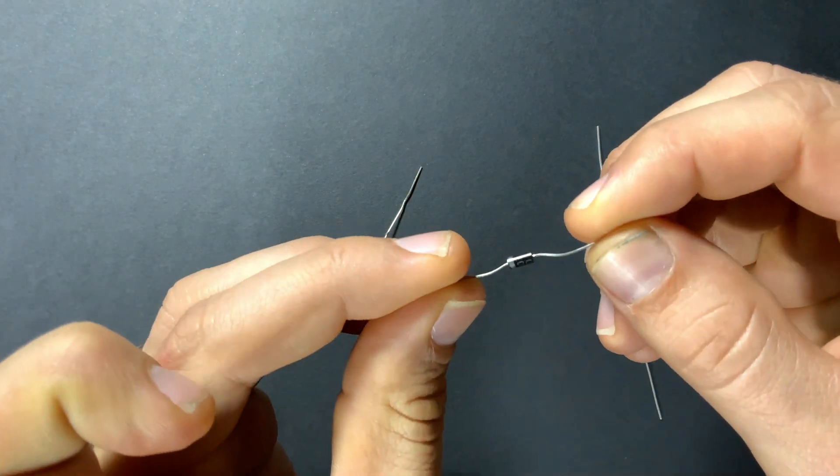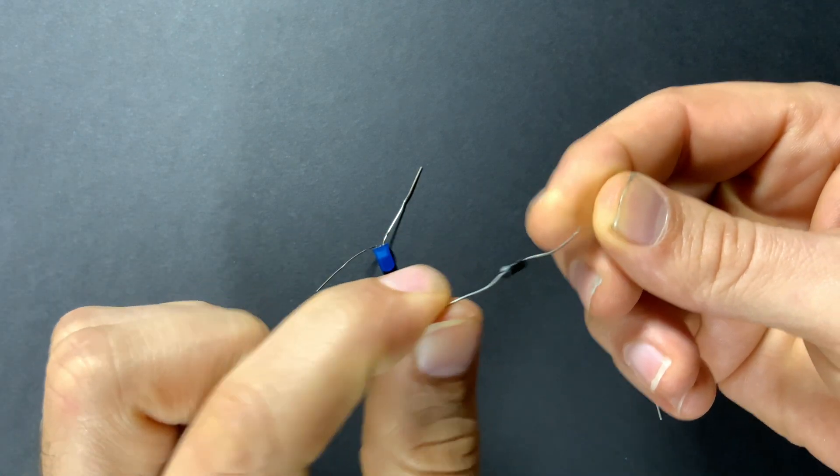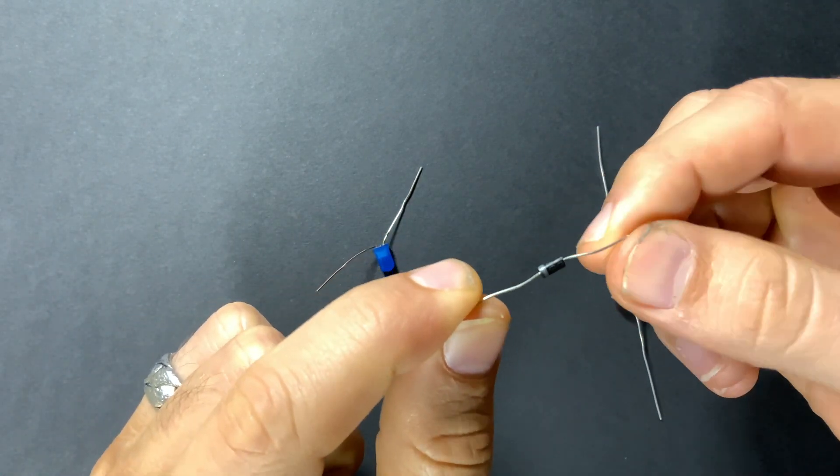So for this one you can look for the white band. That white band is going to represent the negative or the cathode. So this is the cathode. This is the anode side.